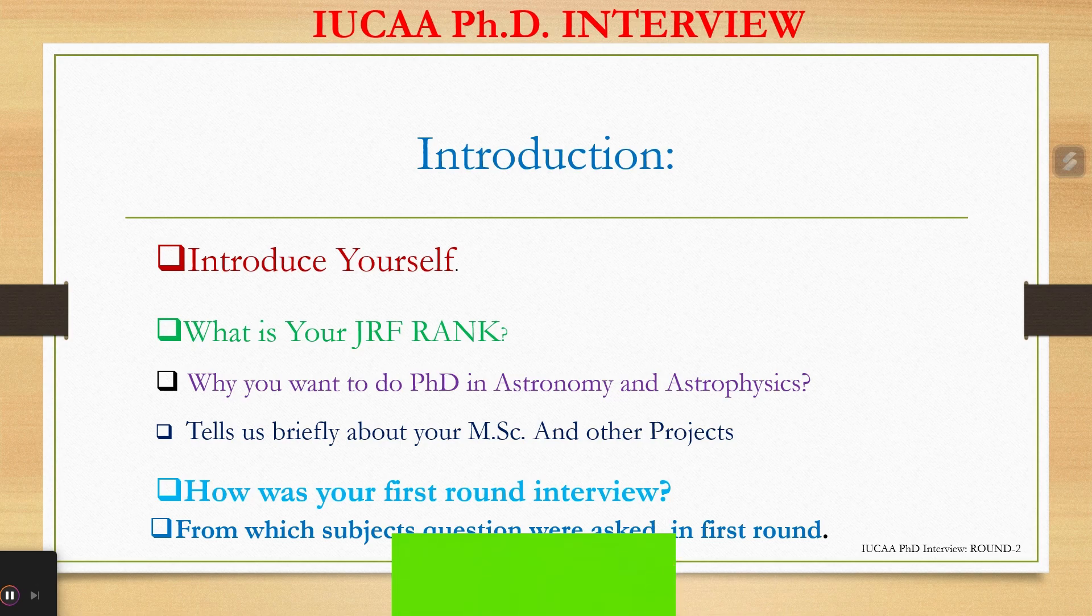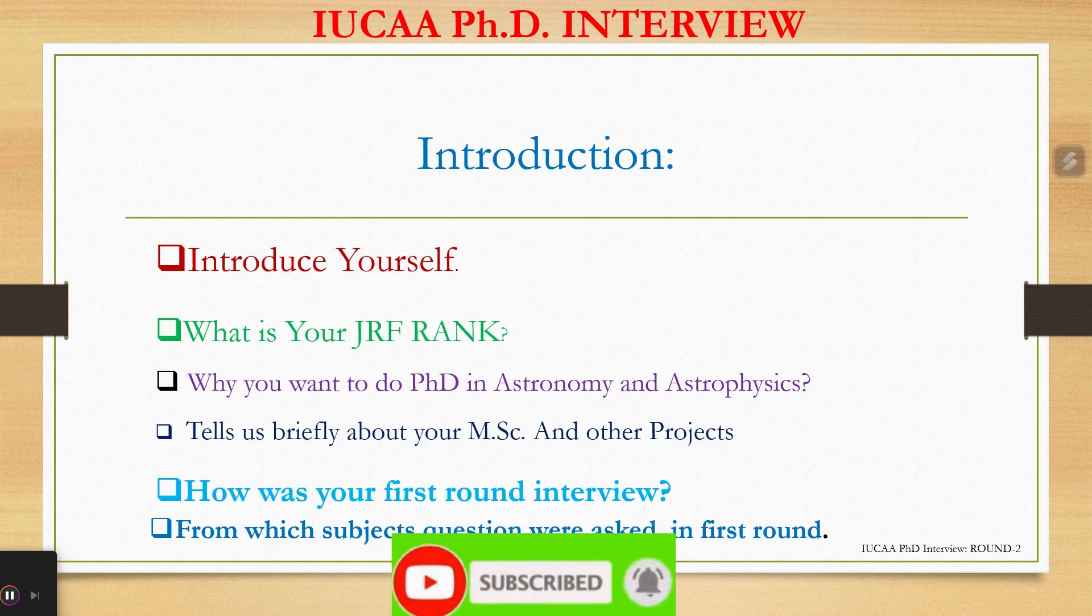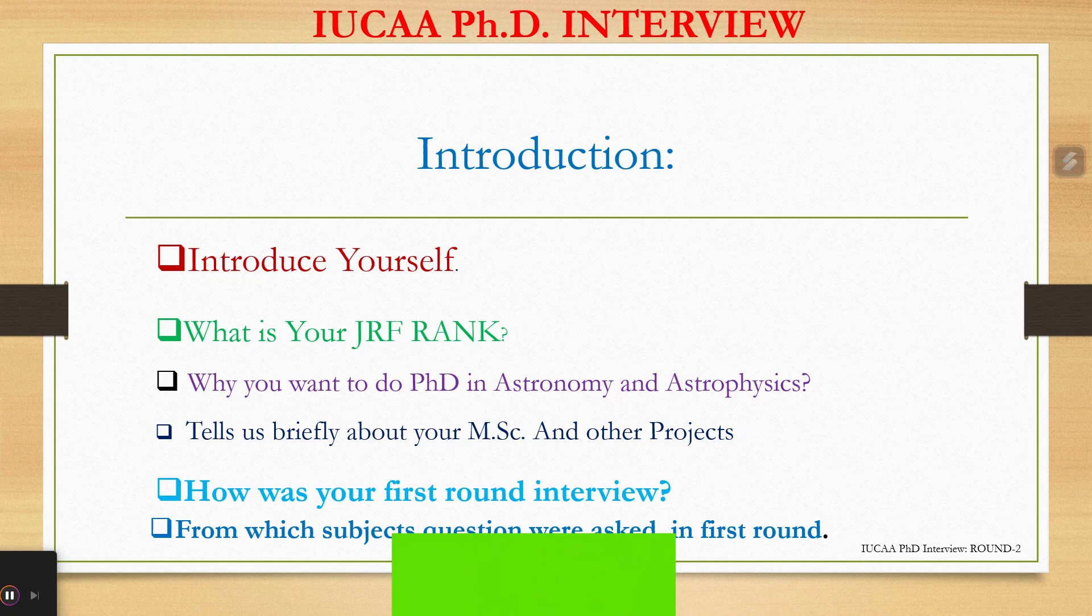So basically I had done three projects during my MSc and after that. My first project was in TIFR VSRP in which I worked on Exoplanet Data Analysis. And my second project was my MSc project in which I worked on Black Holes Shadow. And my third project was in Aries Nainital, where I worked on Variable Stars.